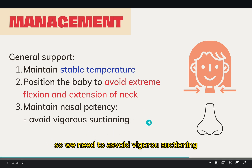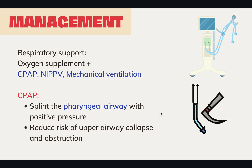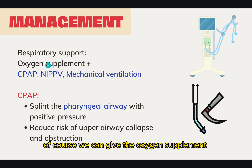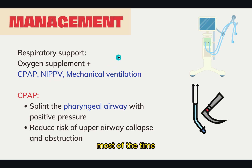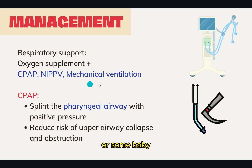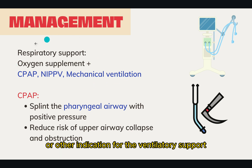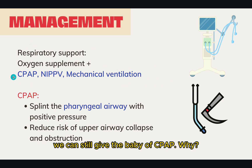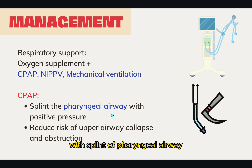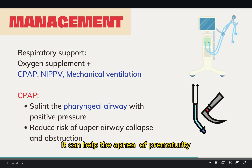The second thing is respiratory support. We can give oxygen supplementation. In premature babies, most of the time we need to give ventilatory support like the non-invasive CPAP and NIPPV. For very premature babies, we may need mechanical ventilation. Even if the baby does not have other indications for ventilatory support and only has apnea of prematurity, we can still give CPAP — because the pressure can splint the pharyngeal airway, reduce the risk of upper airway collapse and obstruction, and thereby help the apnea of prematurity.